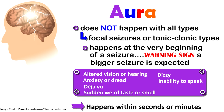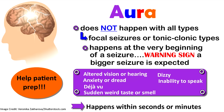Aura symptoms vary by patient. Patients can report altered vision or hearing — seeing spots or squiggly lines, or hearing voices — sudden anxiety or dread, deja vu, a sudden weird taste or smell, dizziness, or inability to speak. As a nurse caring for a patient with a history of epilepsy, you want to ask them what their typical aura is so you can be prepared.